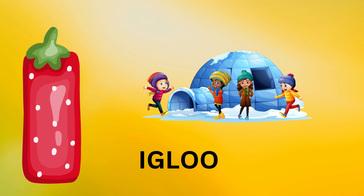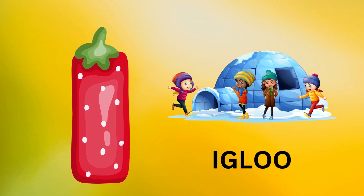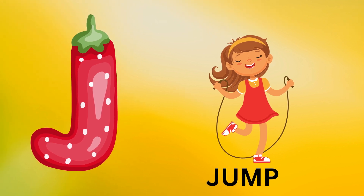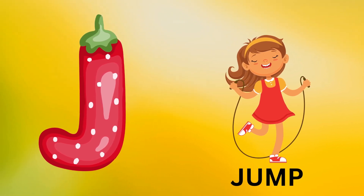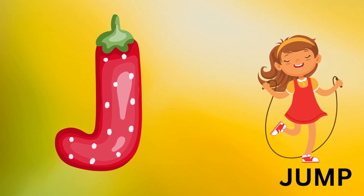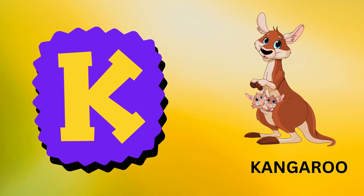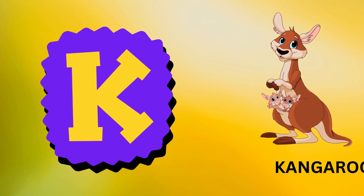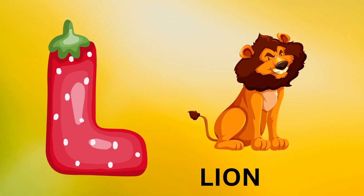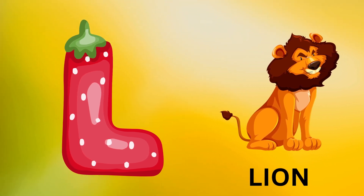I is for igloo, i-i-igloo. J is for jump, j-j-jump. K is for kangaroo, k-k-kangaroo. L is for lion, l-l-lion.